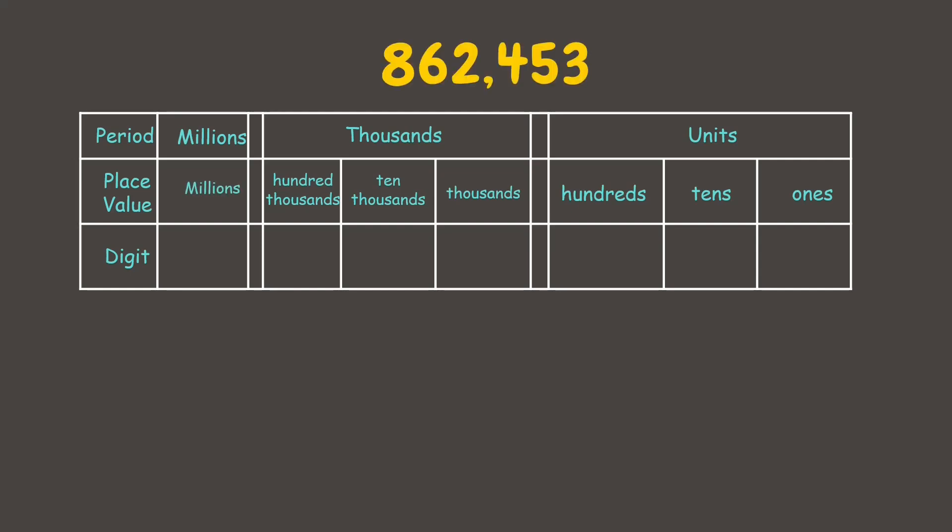Now let's go back to the number of seedlings planted. Let's learn how to read it using a place value chart. First, let's place each digit in its correct place. Here you can see that after every period we put a comma. This is to separate the period from each other.